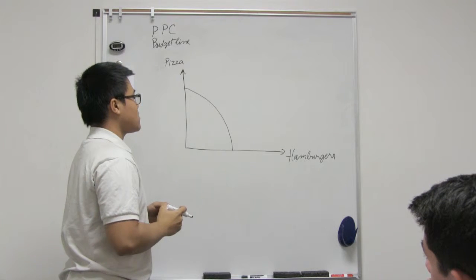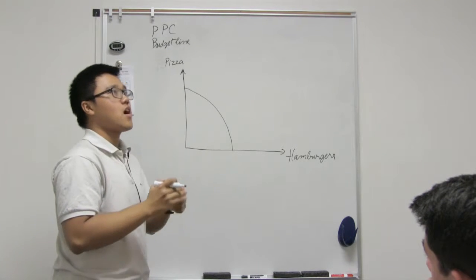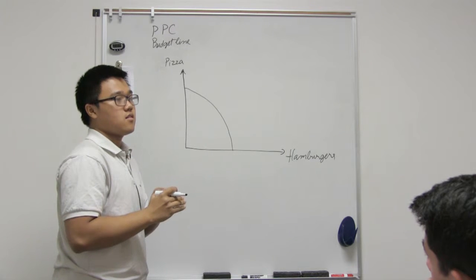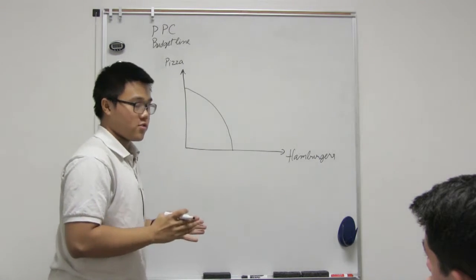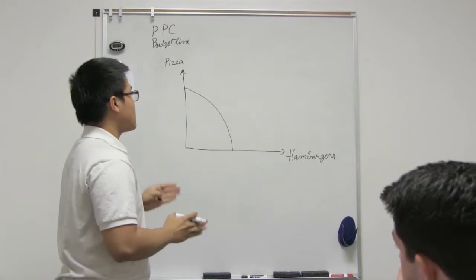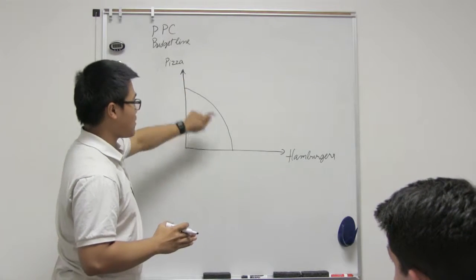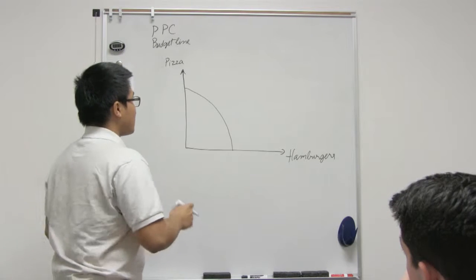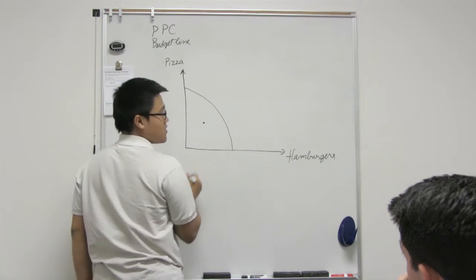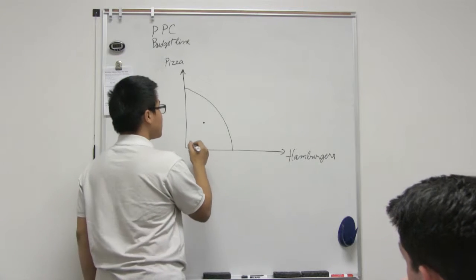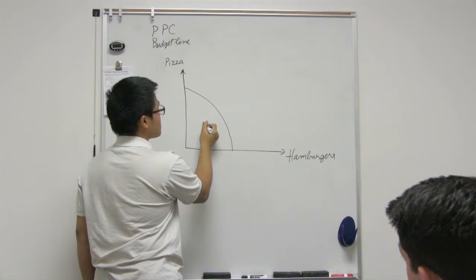And it tells you the maximum amount of goods that you can produce. Actually, it tells you the combinations which you can produce with all your resources. And so that's the maximum. You can't go over that. And as such, anything inside of that curve is attainable because you haven't used all of your resources yet.